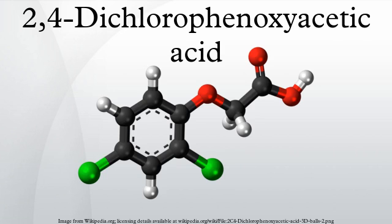2,4-D was one of the ingredients in Agent Orange, the herbicide widely used during the Vietnam War. According to the U.S. National Pesticide Information Center, the controversy regarding health effects centered around the 2,4,5-T component of the herbicide and its contaminant, dioxin.